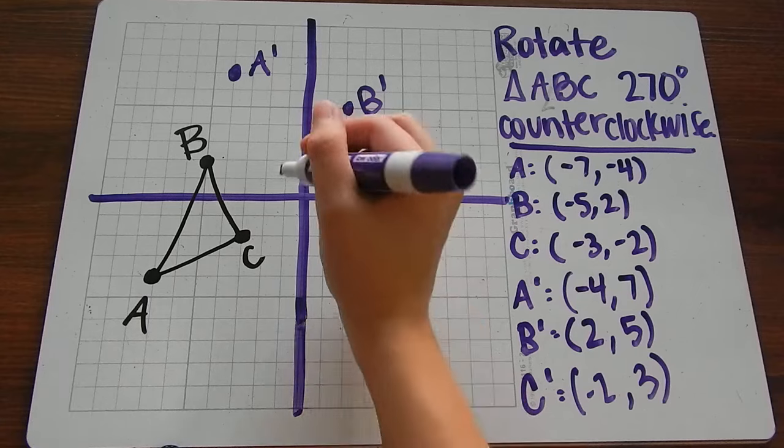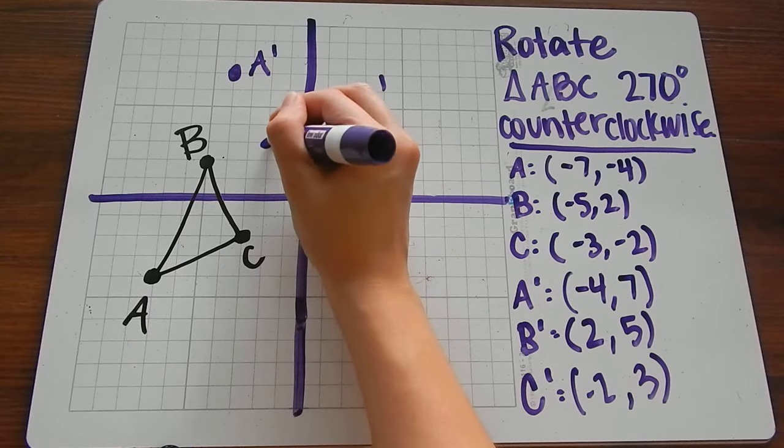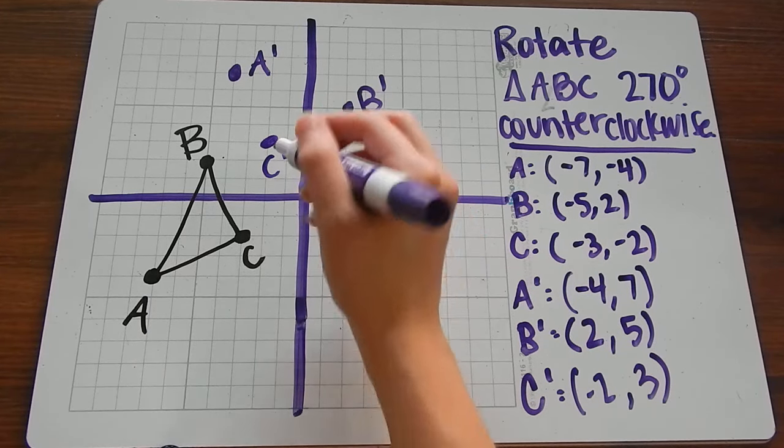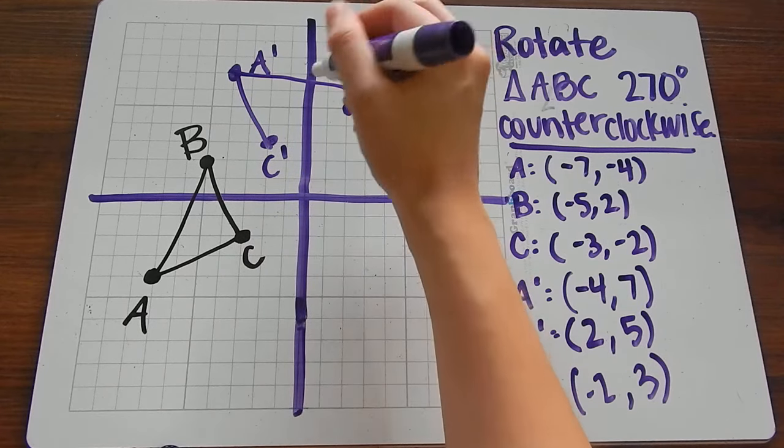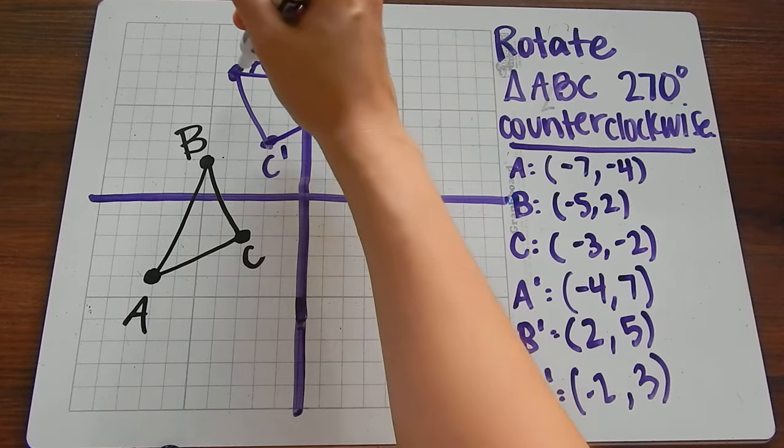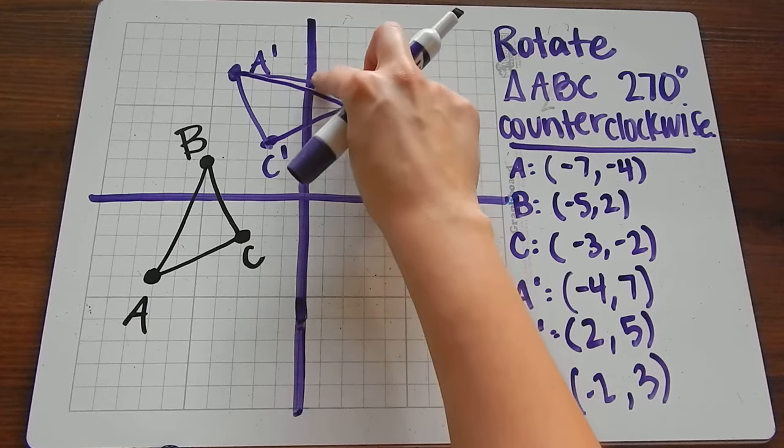And C prime is (-2, 3). Again, I needed that one to be in that quadrant. So here is our new triangle.